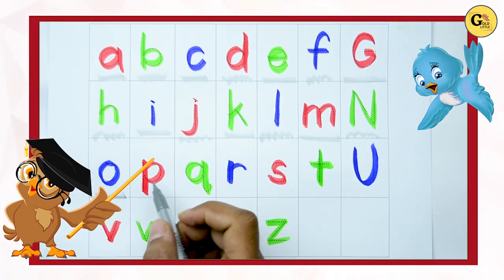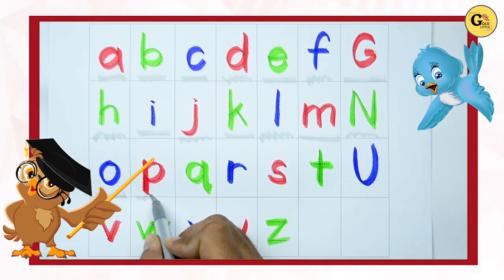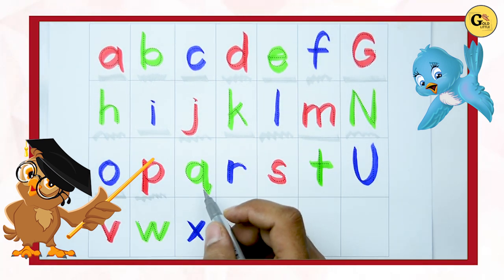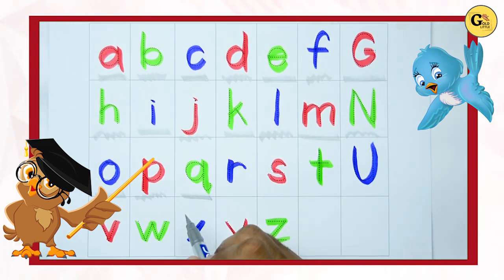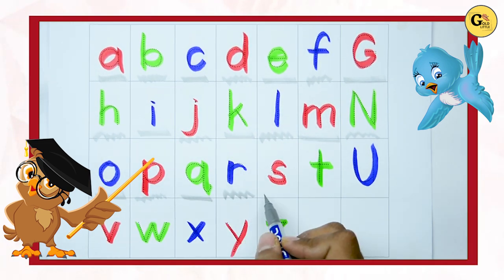O. O for octopus. P. P for parrot. Q. Q for queen.